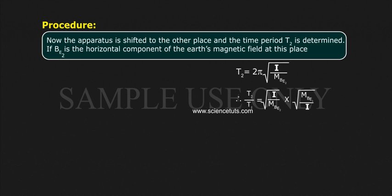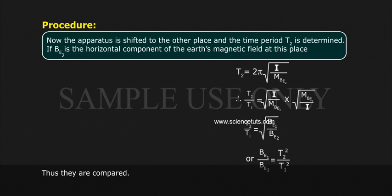Therefore, T2 by T1 is equal to square root of I by MBE2 into square root of MBE1 by I. T2 by T1 is equal to square root of BE1 by BE2, or BE1 by BE2 is equal to T2 square by T1 square. Thus, they are compared.